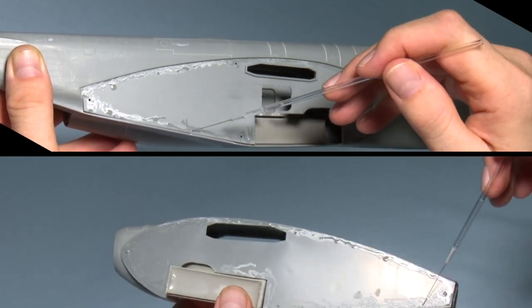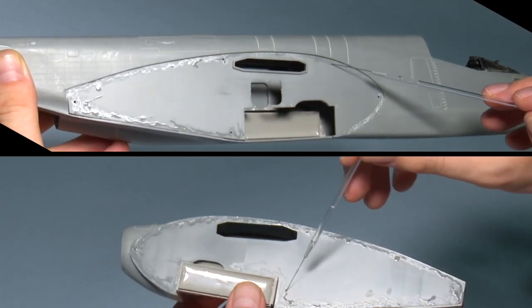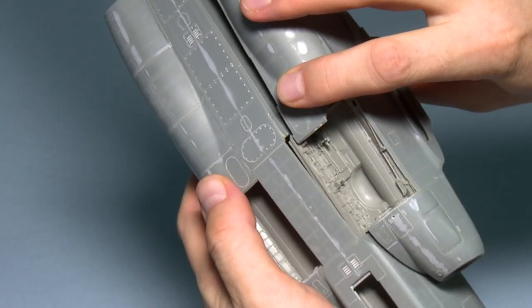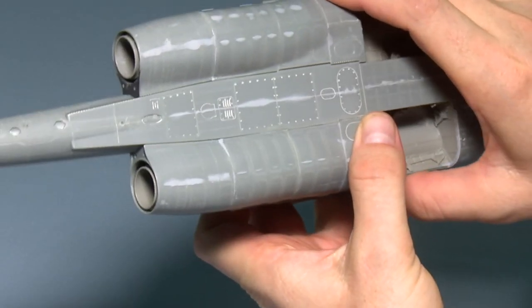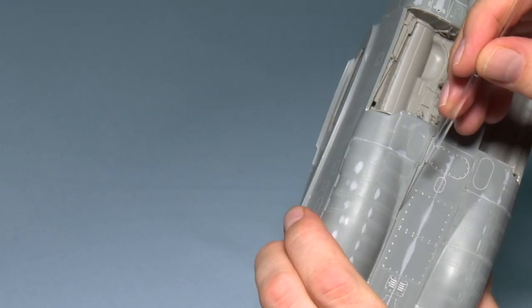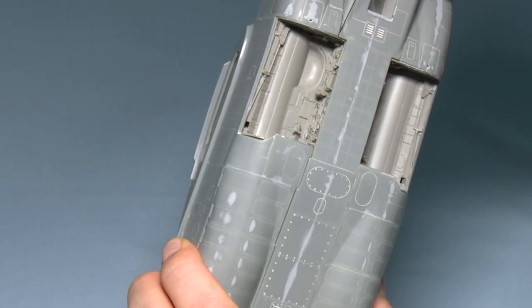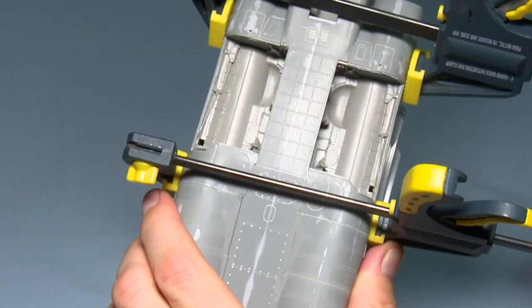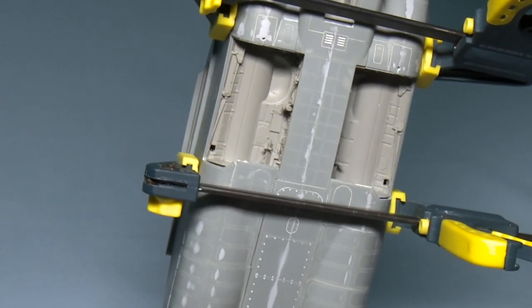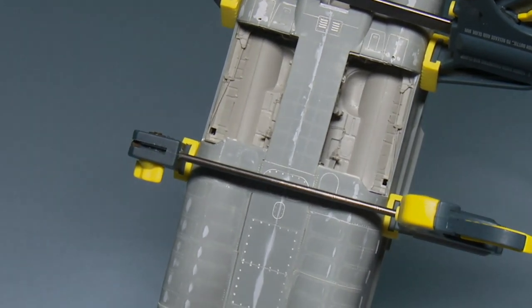You can use either the standard brush applicator, or you can use a needle applicator as seen here. But give it two to three coats, and then when you actually join the two parts together, add some additional glue in between the join, and then make sure that it's nicely clamped and held in place until it sets, usually about 10 minutes to half an hour.